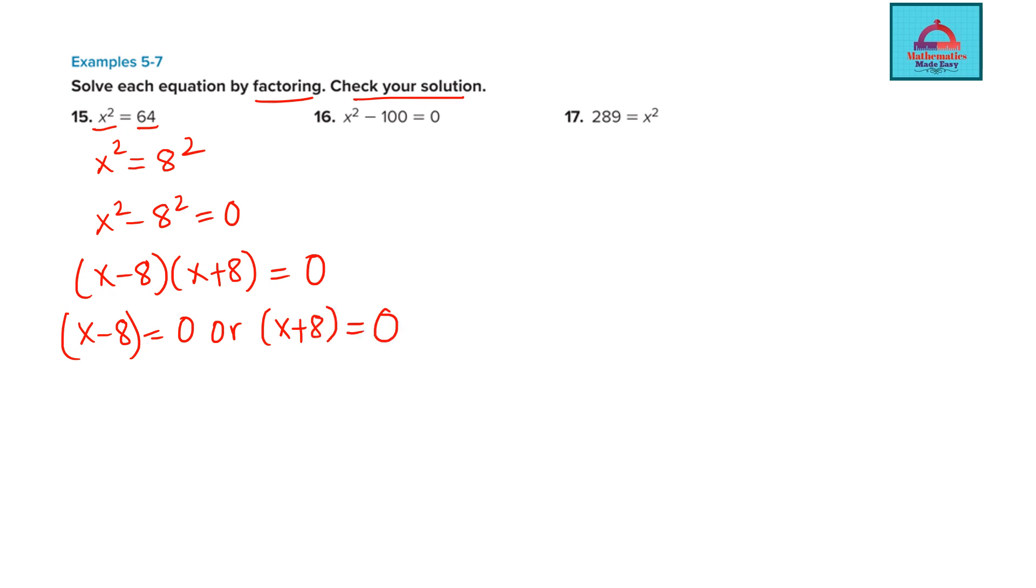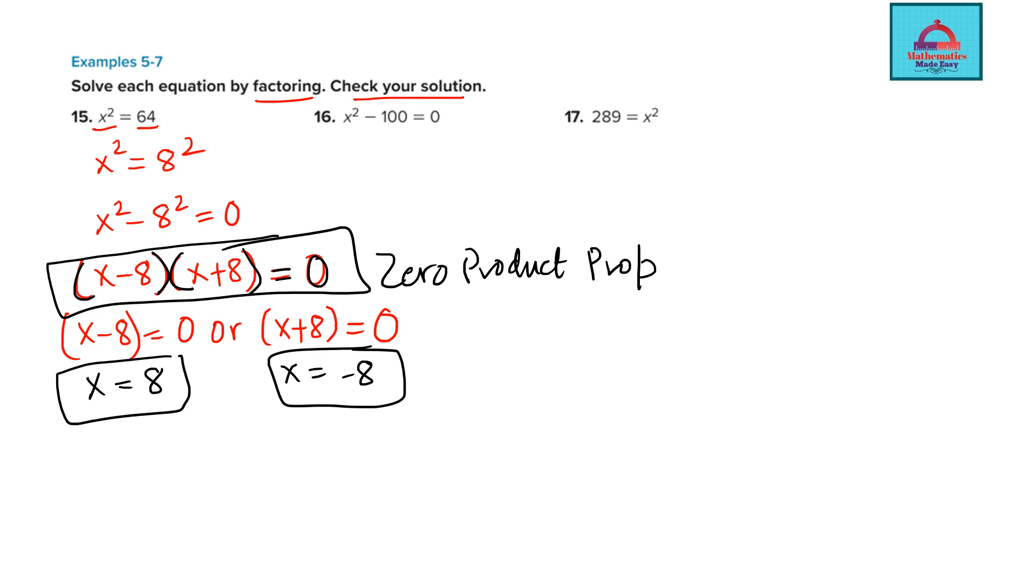I can use a plus b, a minus b property: (x - 8)(x + 8) = 0. When you solve, either x - 8 = 0 or x + 8 = 0. This is called zero product property. Because the product of these two terms equals 0, each bracket equals 0. So x = 8 or x = -8. These are two values of x as your solution.